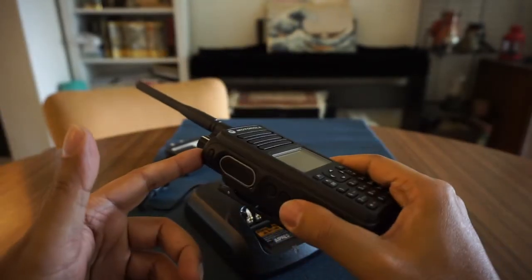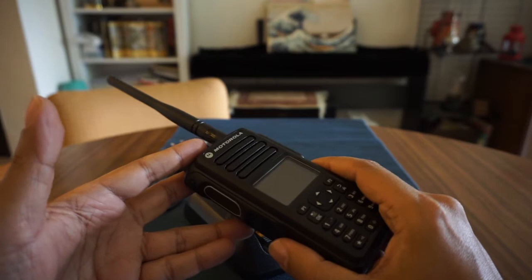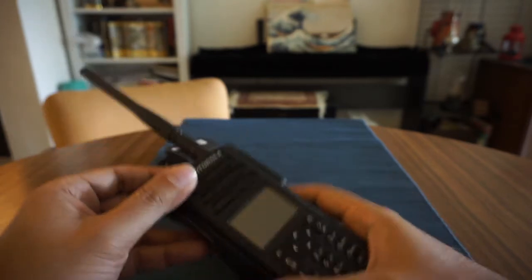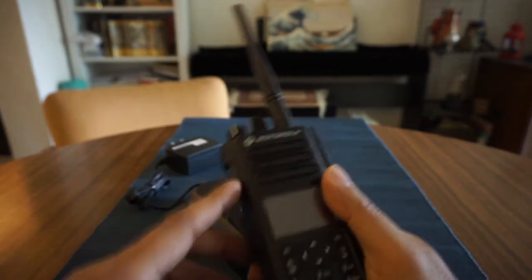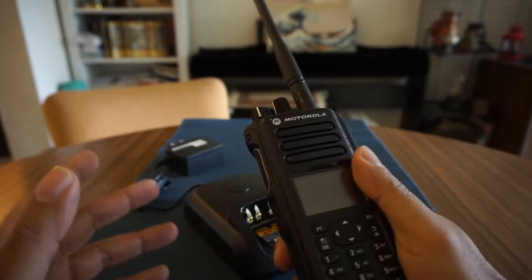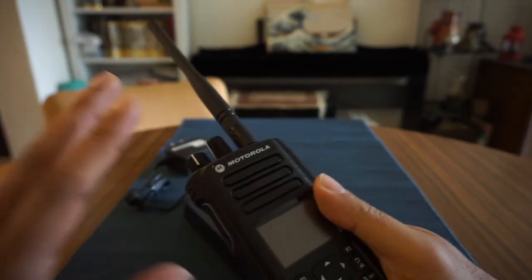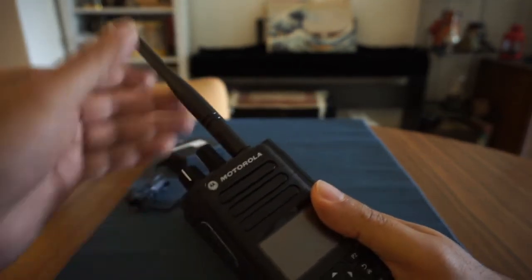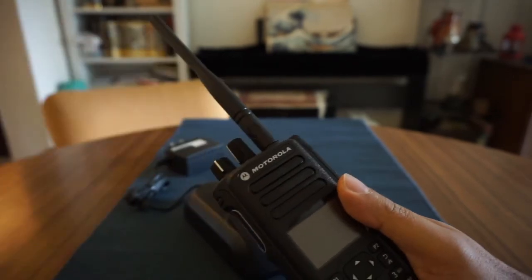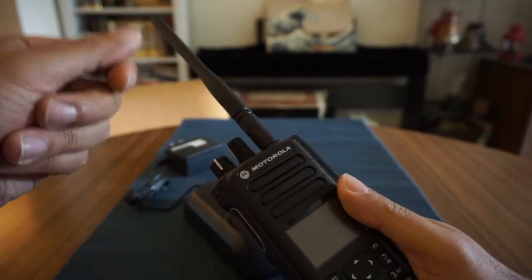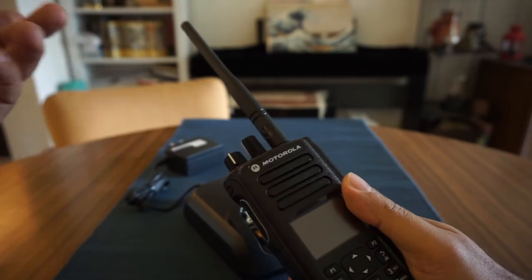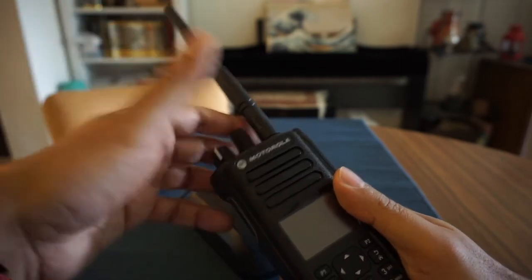Now the next thing we're going to talk about is basically like security, like dealing with security when you're talking over these. So the most important thing to do is whenever you talk over these, like don't use your real name and stuff. Cause basically anybody can be listening to this. Like this is not secure at all. Like this thing here just sending out a message, so basically anyone can just listen to that message. So like yeah, don't give your name, like don't give personal details.